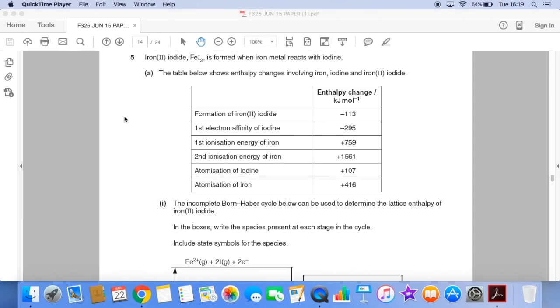I've got a question here that uses iron compounds to test various aspects of the specification. So we've got a Born-Haber calculation in this question, we've got a lattice enthalpy calculation, we've got some electrode potentials, and we've also got a bit of transition element chemistry as well.